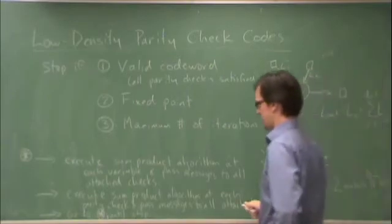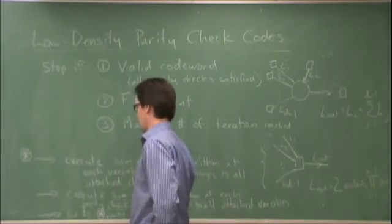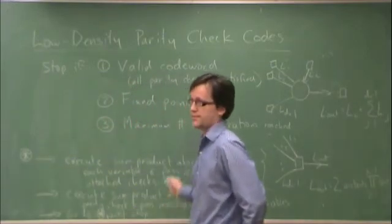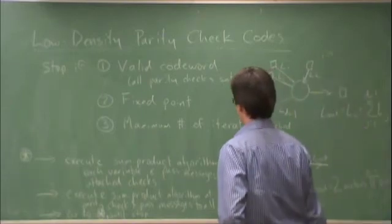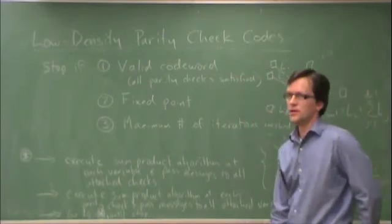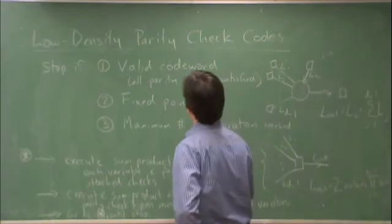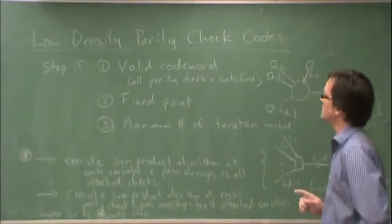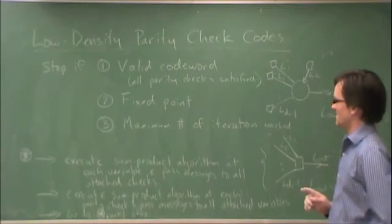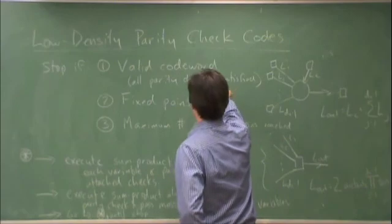So an iteration, I call this an iteration, so each time I go back to start, that's one iteration. Maximum number of iterations depends on the application, but anything from 10 to 1,000 is typical. So it turns out, and I don't think this has ever been proven, because I think it would be extremely hard to prove, but I don't think any counter example has ever been found. If you stop with a valid code word, then that code word was what was sent.